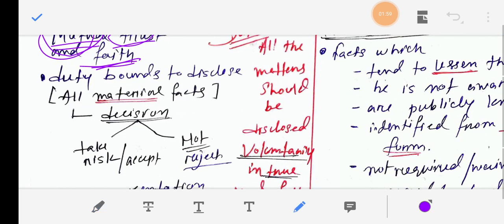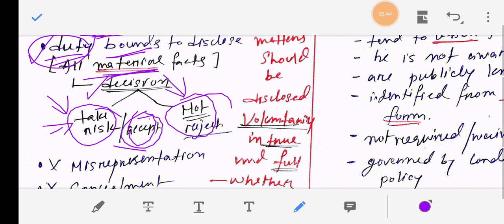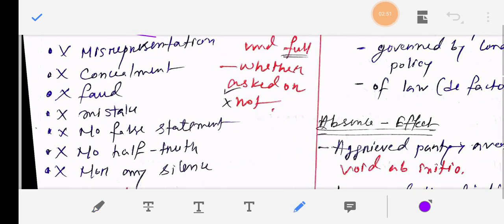The insured buys and pays premium and the insurance company is the insurer who indemnifies policyholders in case the loss occurs. Mutual trust, confidence, and good faith are important. Both parties are duty bound to disclose all material facts. Material facts are facts that affect the decision of whether to take risks or not. According to the policy, full disclosure is very important. Material facts affect decision making.